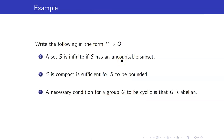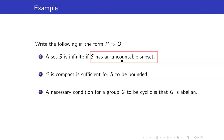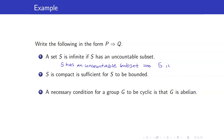Let us write the following in the form: if P, then Q. A set S is infinite if S has an uncountable subset. We see the word 'if,' so the premise is the second part: S has an uncountable subset. Therefore, the conditional is: if S has an uncountable subset, then S is infinite.